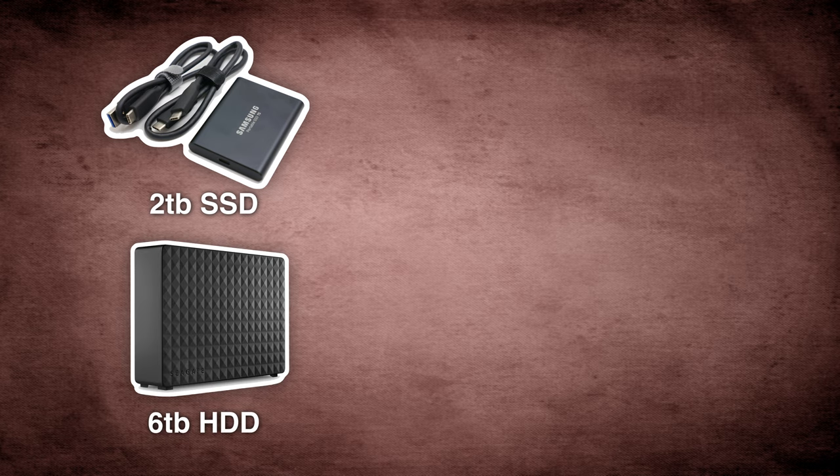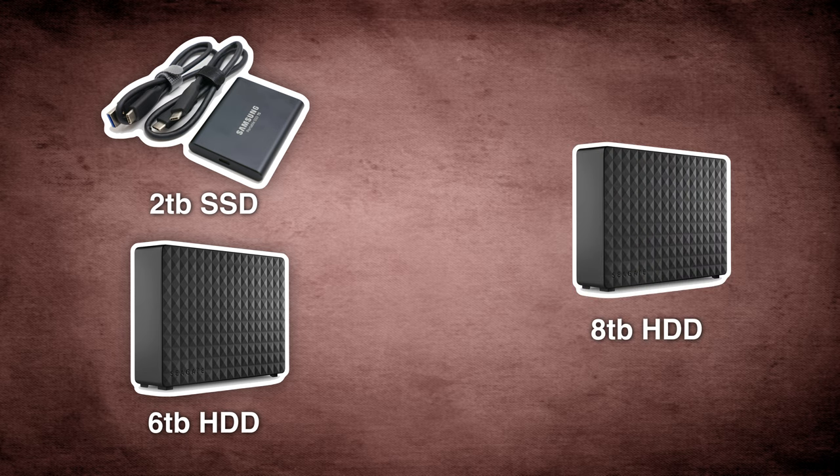More typically it would be split between solid state drives and hard drives — for example, a 2 terabyte SSD that stores your active projects that you need to load quickly, and then a 6 terabyte spinning drive that holds your general storage and archived files.